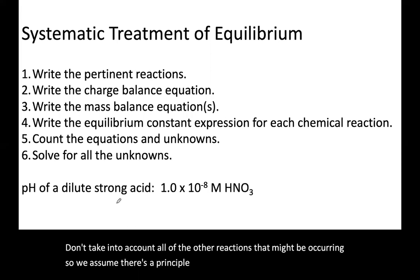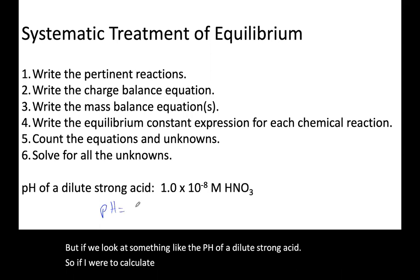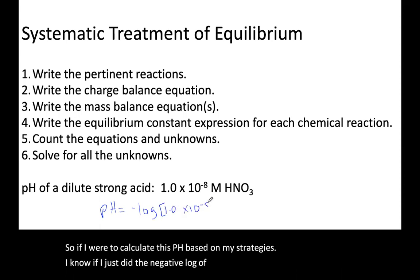If we look at something like the pH of a dilute strong acid, if I were to calculate this pH based on my strategies, I know if I just did the negative log of this concentration, I would get a pH of 8. For a strong acid, I should not get a basic pH.